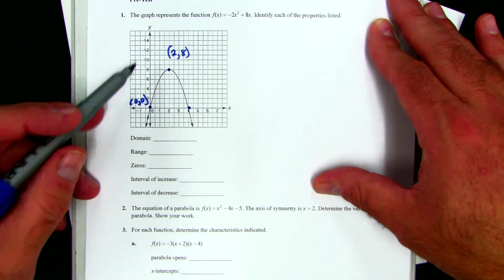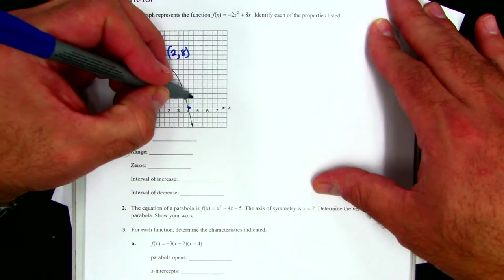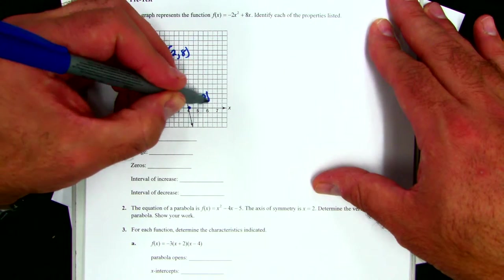It also ends up being the y-intercept. It's both. And then this one over here would be 4, 0.